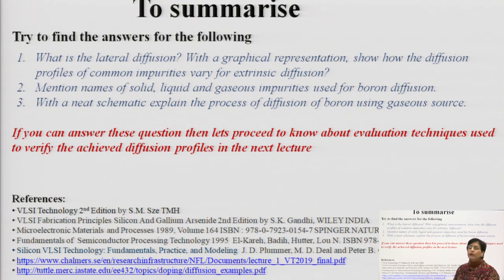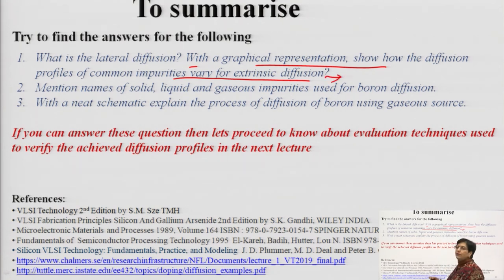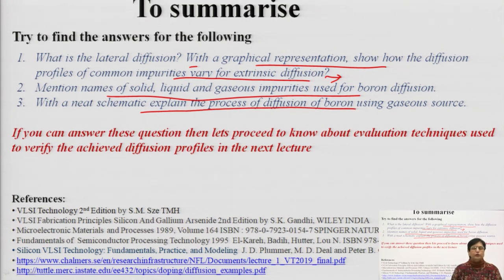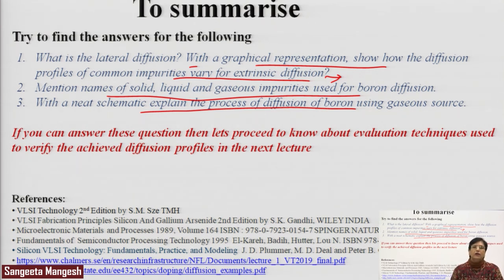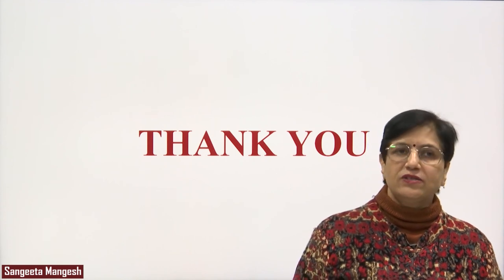Before we wind up, let us try to answer these questions: What is lateral diffusion? How do you represent it graphically? What are the common impurity profiles? How do profiles vary in extrinsic diffusion — what is exactly extrinsic diffusion and how do profiles vary with concentration, such as nᵢ² terms? Mention the names of at least one solid, one liquid, and one gaseous species, and be able to draw the schematic of the furnace and elaborate the process. You have applied the equations, known the technique, and understood the furnace operation. Let us proceed further for different parameters or impact factors in the next lecture. Thank you.